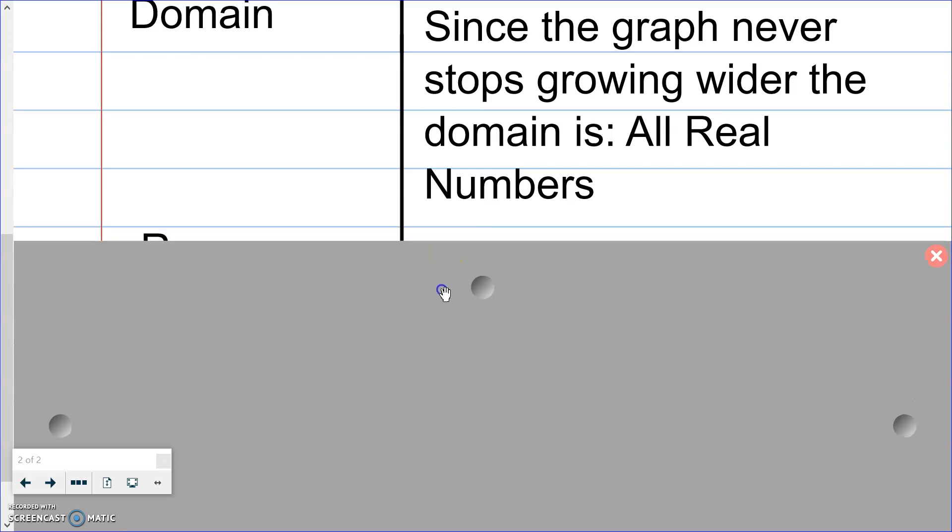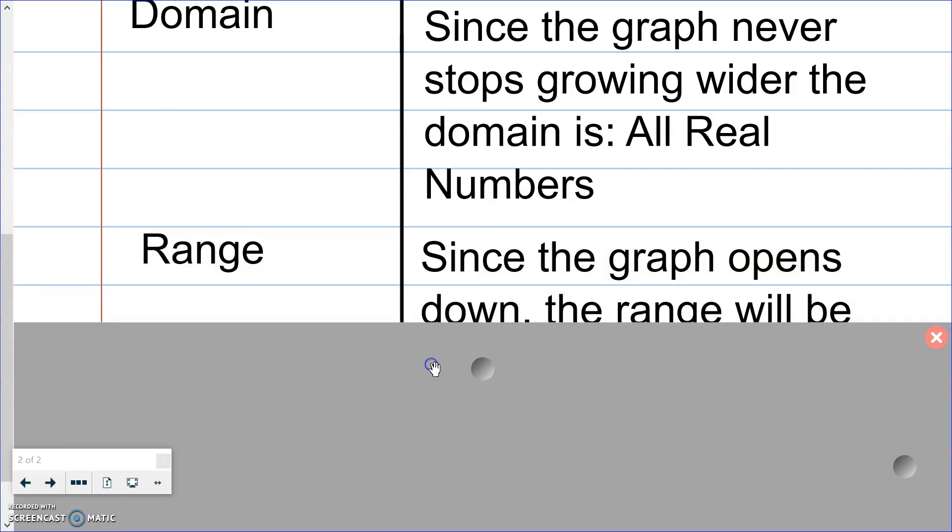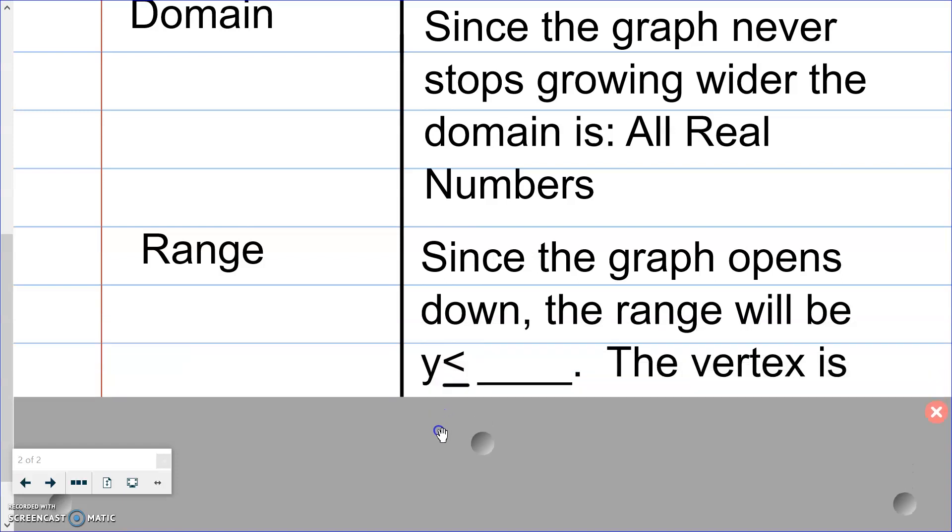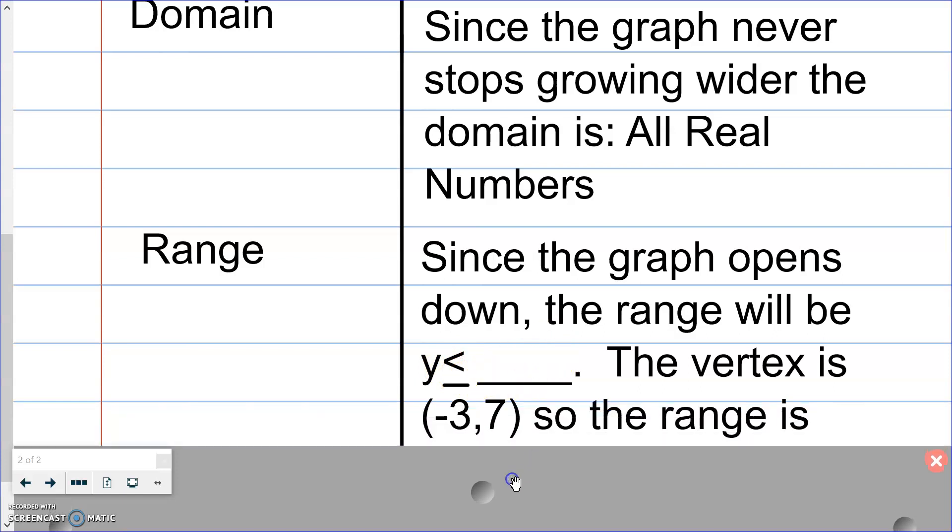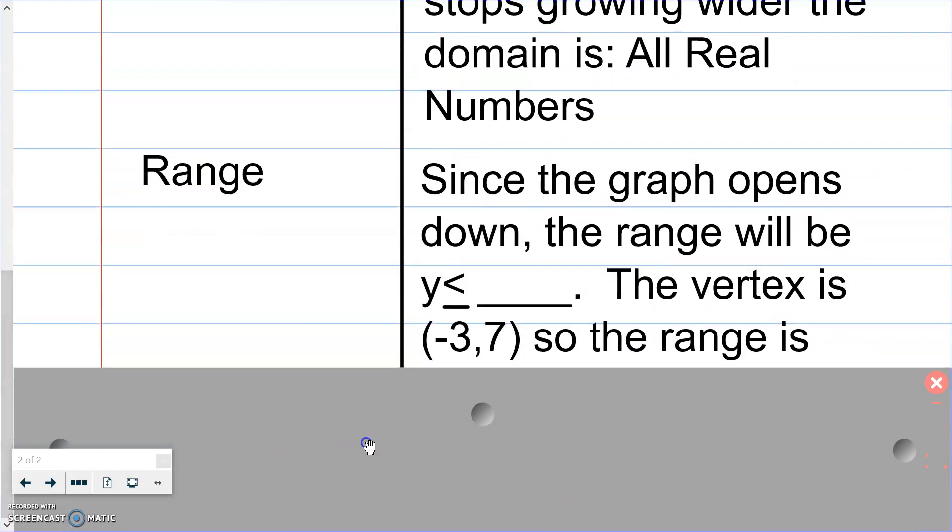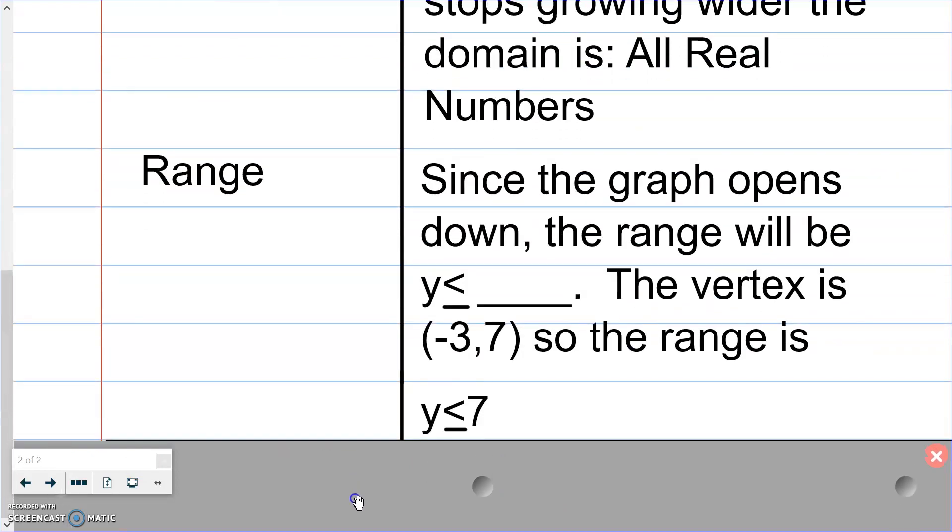Our range however is once again used from the vertex. Since the graph opens down, the range will be y is less than or equal to some number and that number comes from the vertex. It's the y component. (-3,7) is our vertex so the range is y≤7.